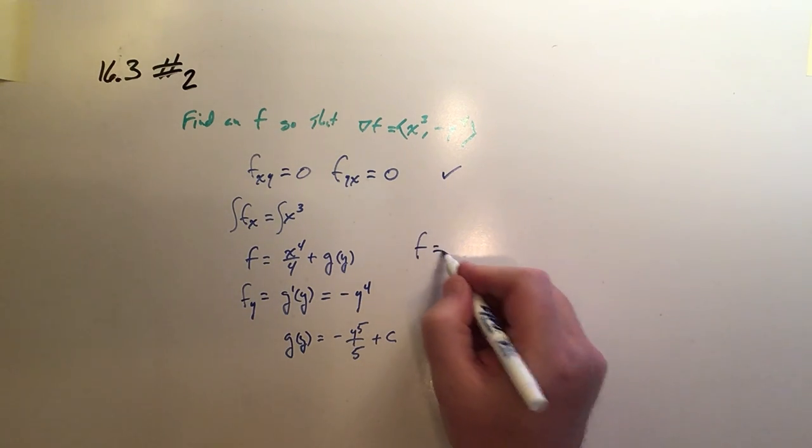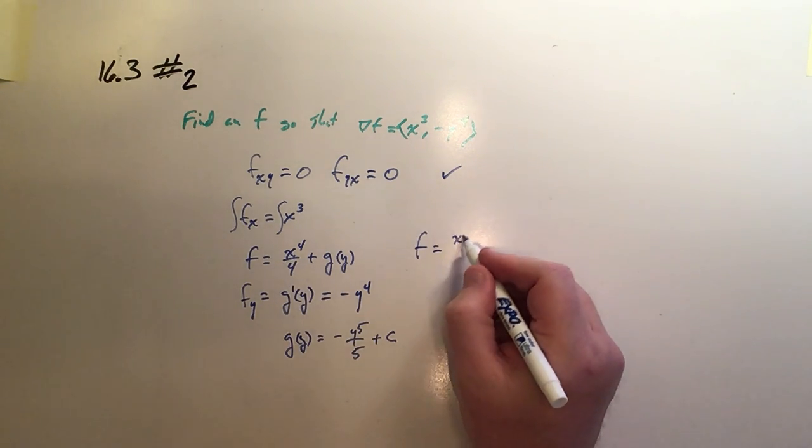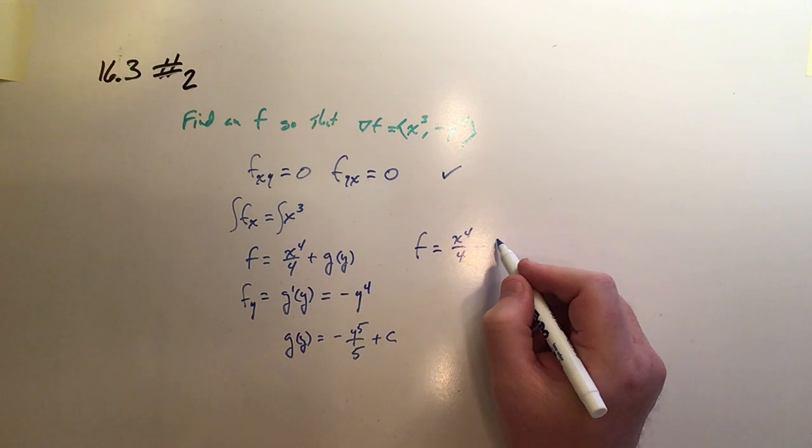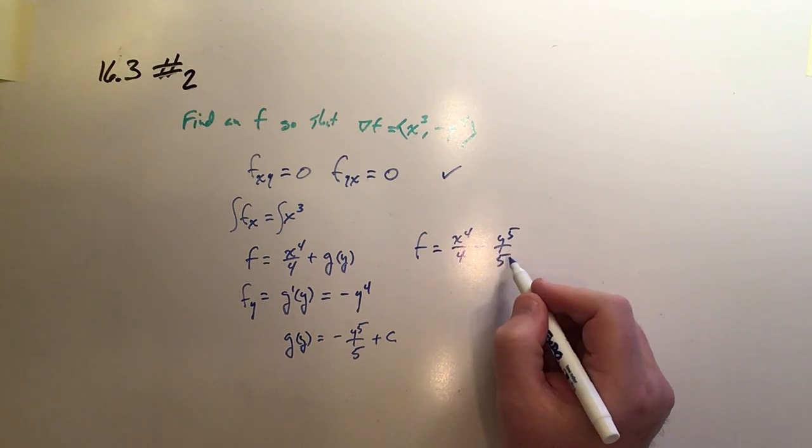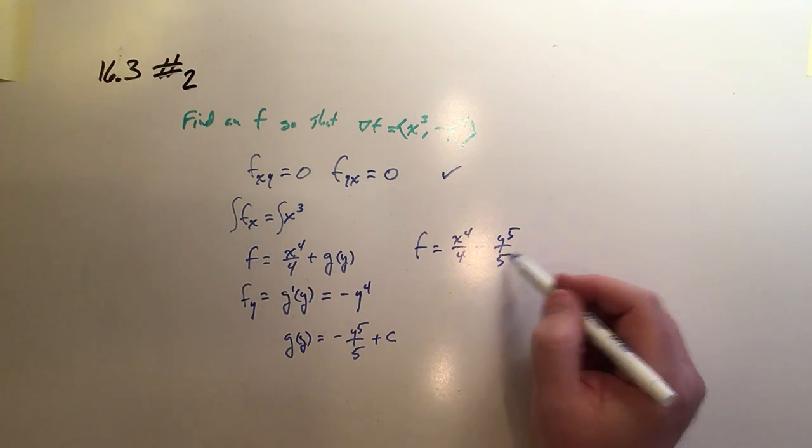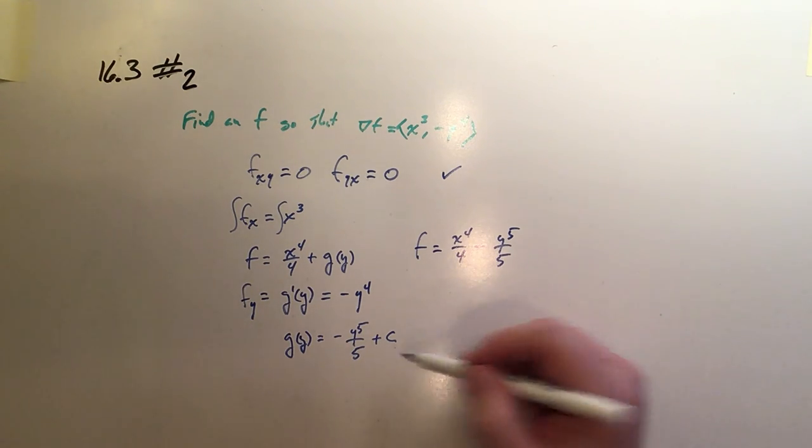Well, there it is. There's our f then. It's x^4/4 plus whatever the g(y) is. And I found that to be -y^5/5. Again, strictly speaking, plus c. But we're going to find out for practical purposes that we're never going to need that constant.